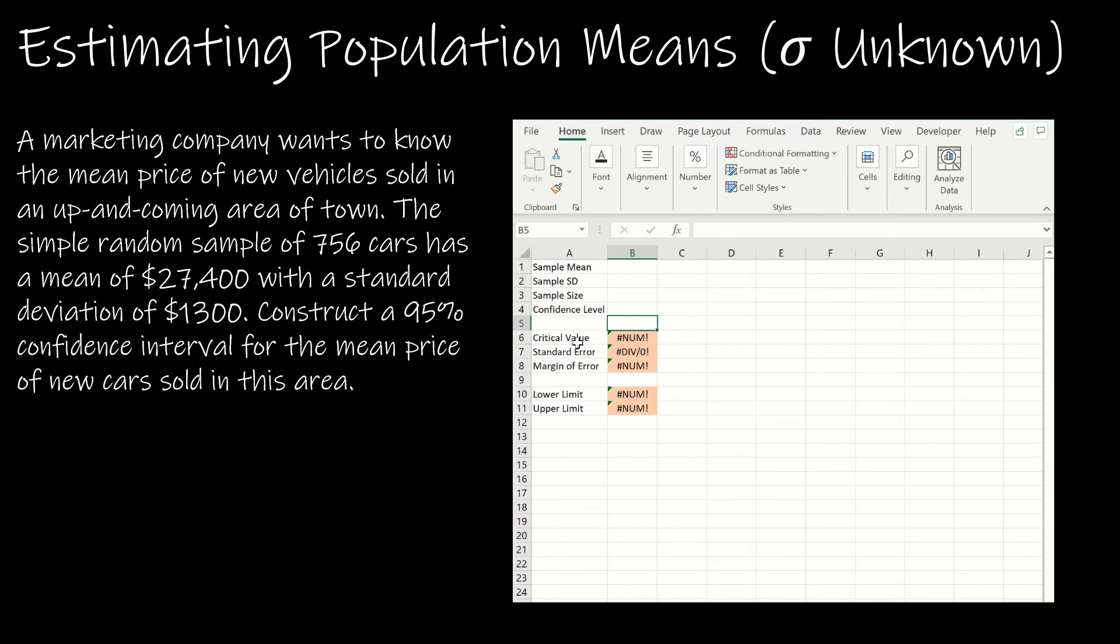Just as we talked about before with the critical value, I need to take T.INV two tail of the alpha level. Notice alpha level isn't one of the inputs because typically they won't give you the alpha level, they'll give you the confidence level. But remember that the alpha level is just one minus the confidence level. So if you'll notice here, I have T.INV two tail, and then one minus the confidence level, and then B3 minus one is the sample size minus one, which is the degrees of freedom.